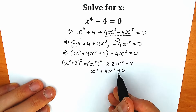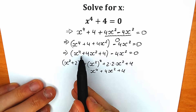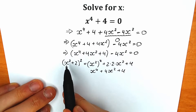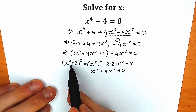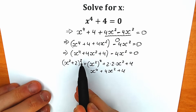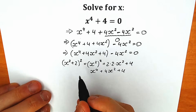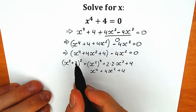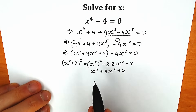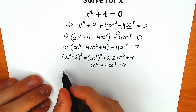As you can see, this is absolutely the same expression, so we can replace it with x squared plus 2, all squared. This basic formula x squared plus 2 to the second power is absolutely the same as what we had.